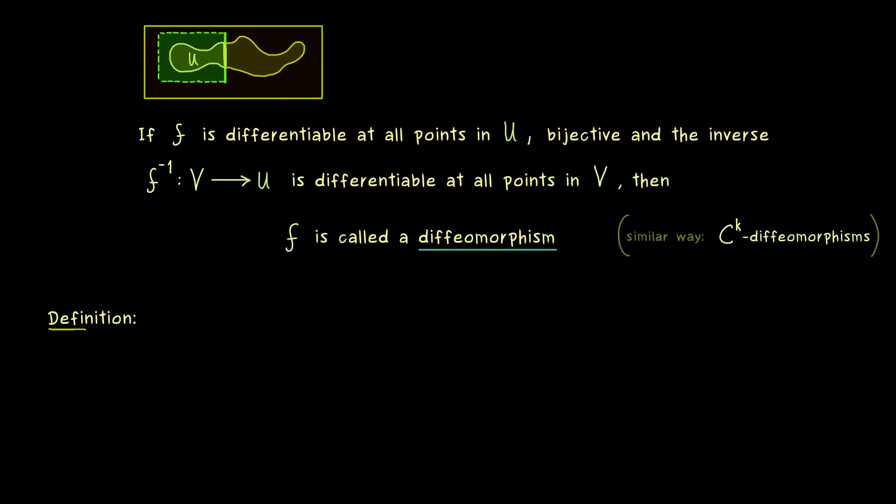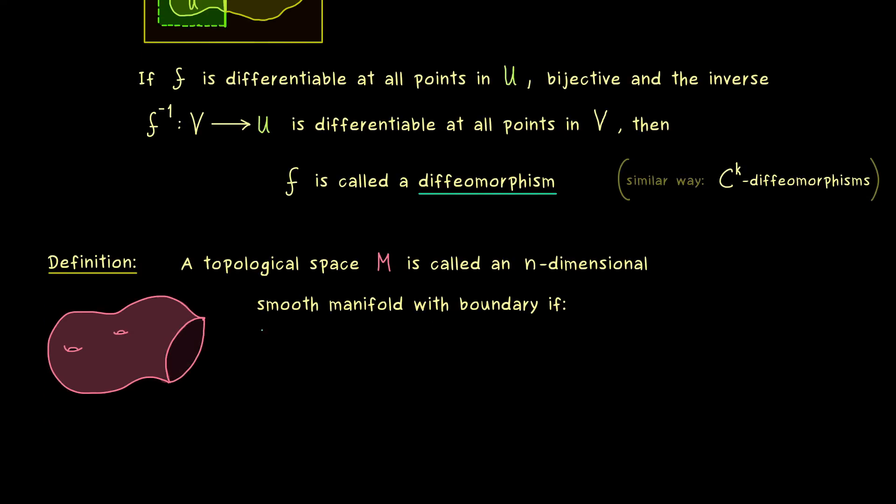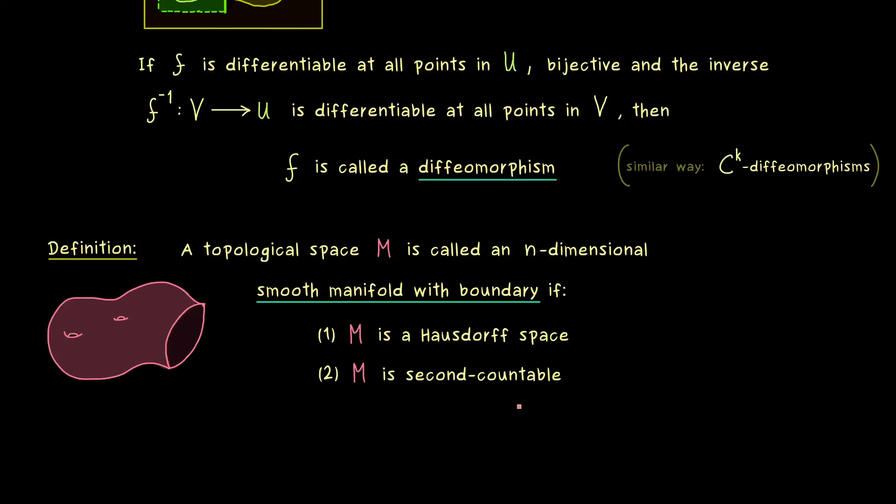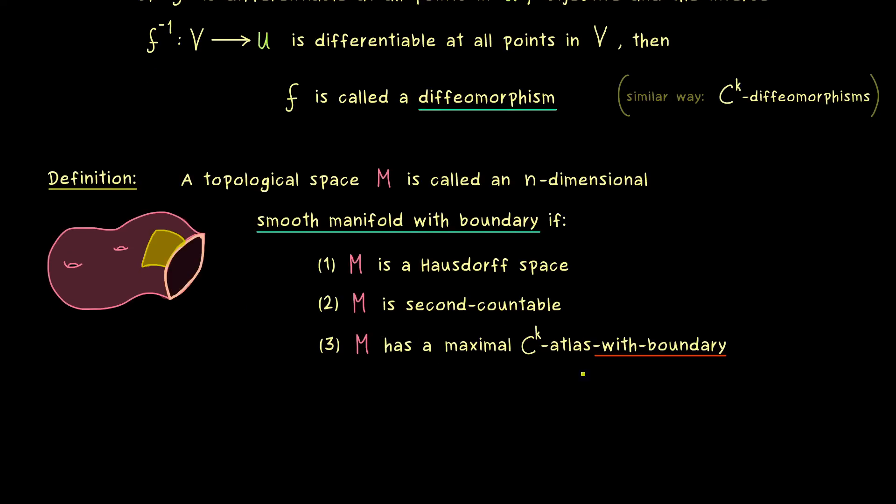And that's all we need to define smooth manifolds with a boundary. In fact we can reuse everything we have already defined for smooth manifolds. So as always the starting point is just a topological space M and now we fix the dimension of the manifold with n. And then we say it's a smooth manifold with boundary if it satisfies three conditions. And essentially not much changes because we still need a Hausdorff space which is also second countable. And as we already know the third ingredient for a smooth manifold is that we have a maximal Cᵏ atlas. And simply there we can just change it to an atlas with boundary.